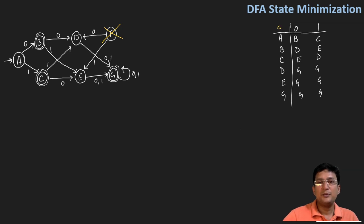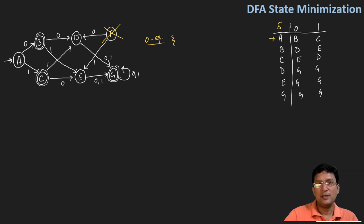The right-hand side shows a transition table which does not contain state F. Now for the zero equivalence, we will segregate the non-final and final states. In this table, B is a final state, C is a final state, and G is a final state. So one set would be {A, D, E} and another set would be {B, C, G}. This is the zero equivalence.